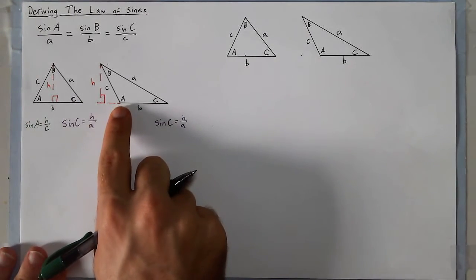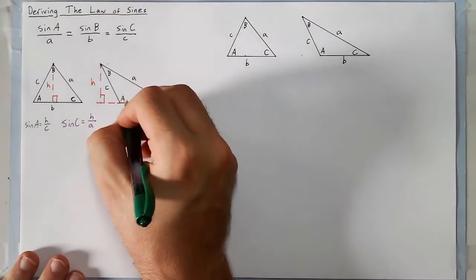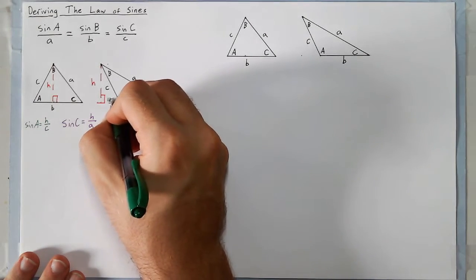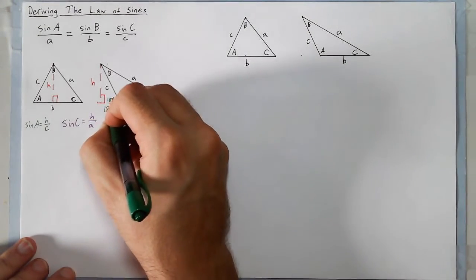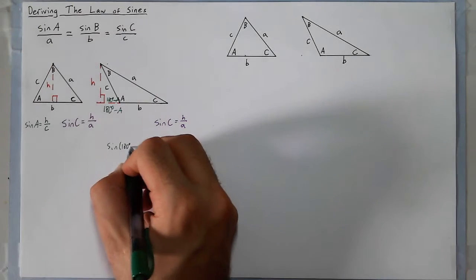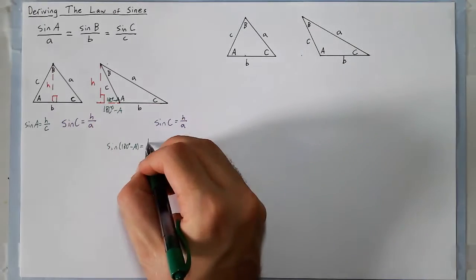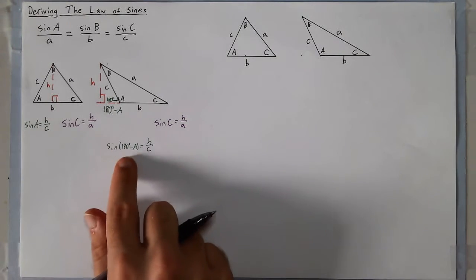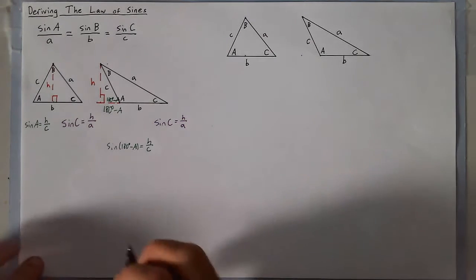But for angle A in the obtuse triangle, it's not directly part of a right triangle. So instead, I'm going to use the angle on the inside, which is the supplement of A. These are two angles along a horizontal line, so this angle would be 180 degrees minus A. Therefore, sine of 180 degrees minus A is equal to H over c.